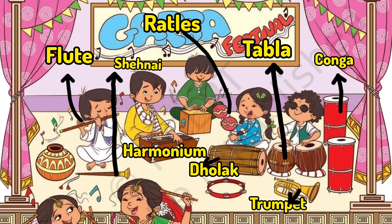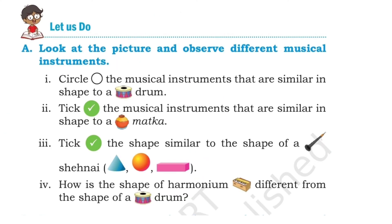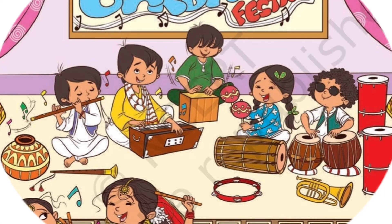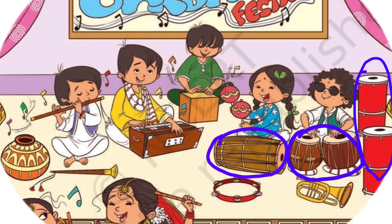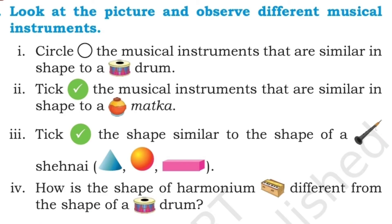Let's go into the question and answer based on this picture and the instrument shapes. Look at the picture and observe different musical instruments. Circle the musical instruments that are similar in shape to a drum. So we have tabla and conga — these instruments are similar to a drum.